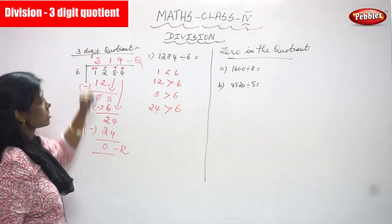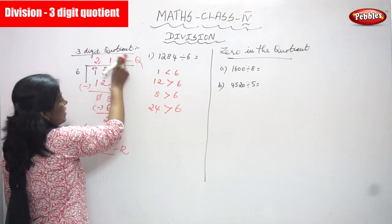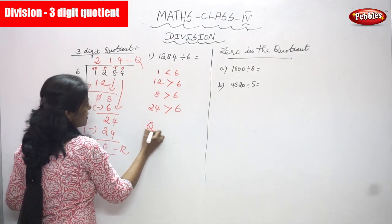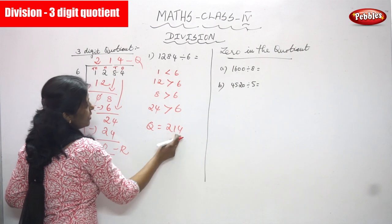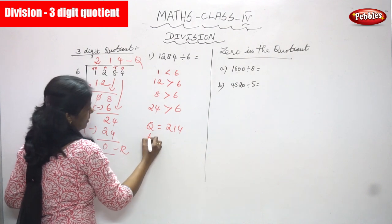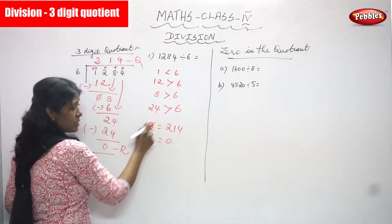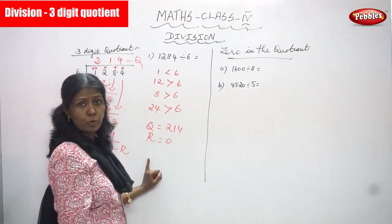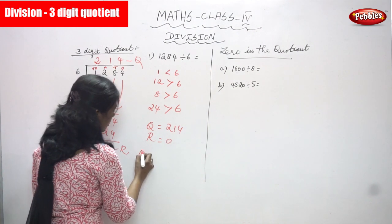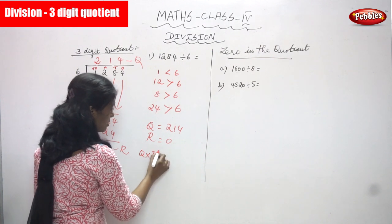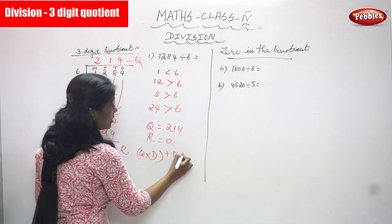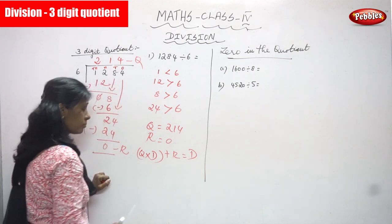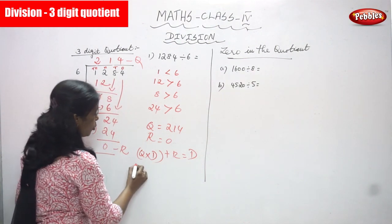The quotient is 214 — that is a three-digit number: 1, 2, 3 — three digits. The remainder is zero. But you must check whether the answer is correct. Use the check method: quotient × divisor + remainder = dividend.